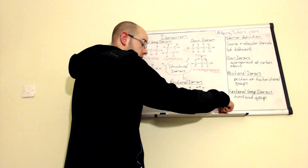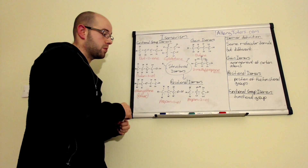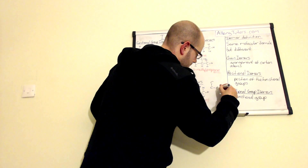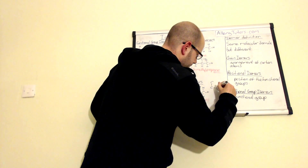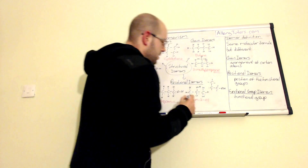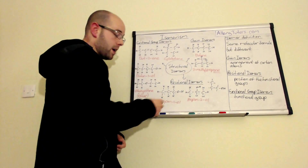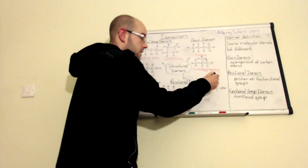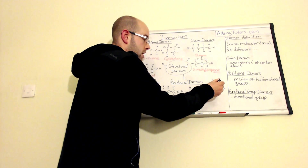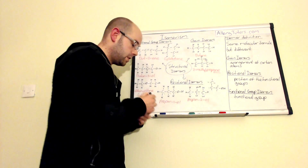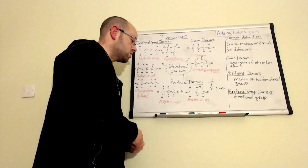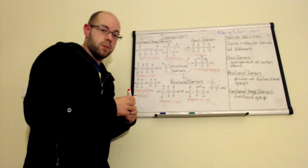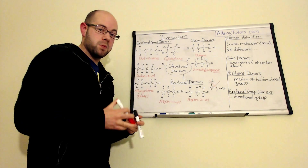Another thing to watch out for is the shape of the molecule. If you just rearrange the shape of propan-1-ol — even though it looks different — it's still propan-1-ol: three carbons as the longest chain with the alcohol on the first carbon. You can't just change how the carbons are arranged, make pretty shapes, and expect a different isomer. The full name has to be different.